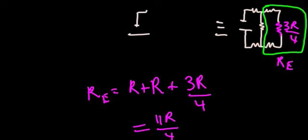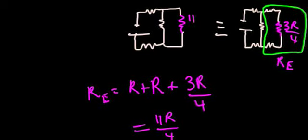So the equivalent resistance of that circled part is 11R over four. We can redraw another circuit and replace the resistor, the green part, with a new resistance of 11R over four.